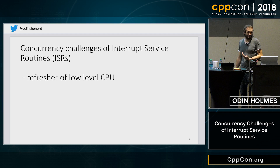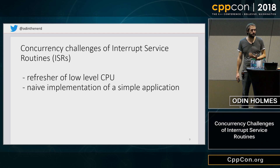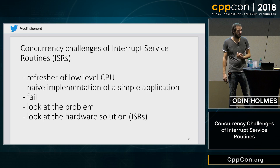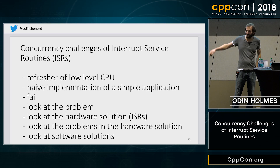So, a roadmap of what's coming at you: we're going to do low-level CPU stuff, a naive implementation of an event-based program written entirely in software. We're going to fail at it. Then we're going to look at the problem — why did we fail? We're going to look at the hardware solution, which is interrupt service routines. Then we're going to look at the problems with the hardware solution, and then software solutions for those problems. Going very low level: this is sort of what marketing thinks a processor is. At some level we have transistors, which are hard to reason about, so we put them together into gates.